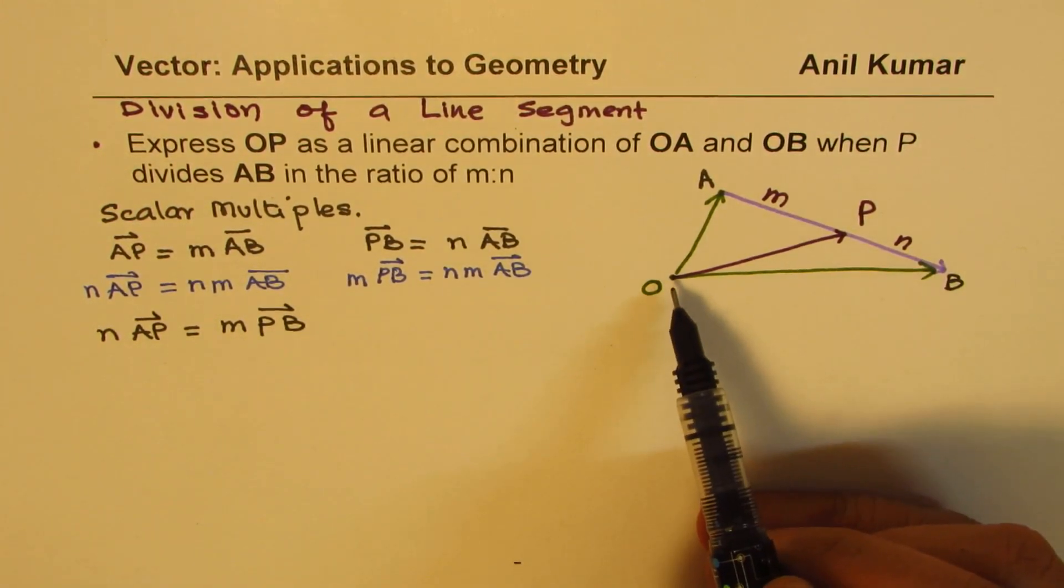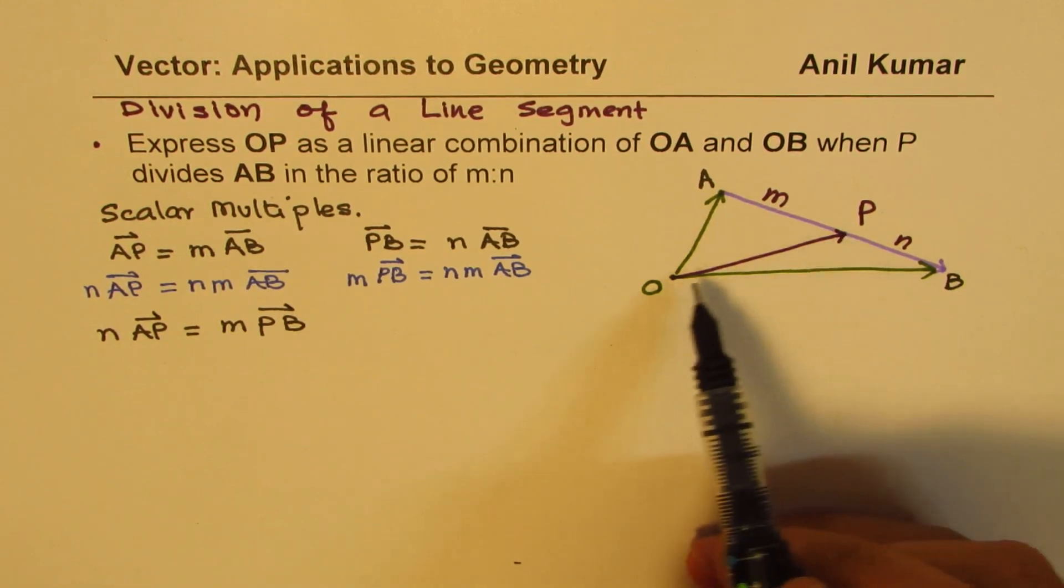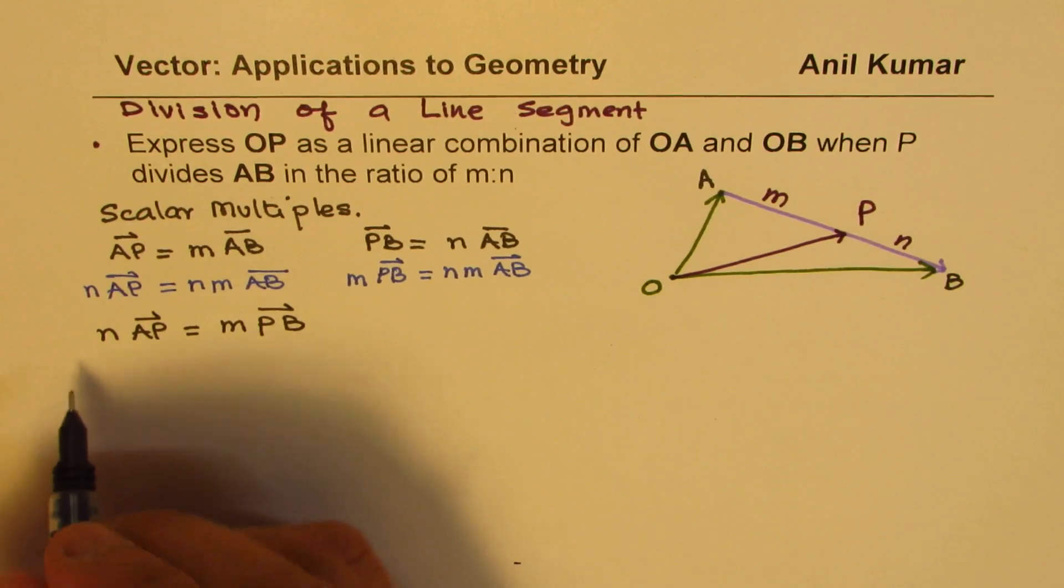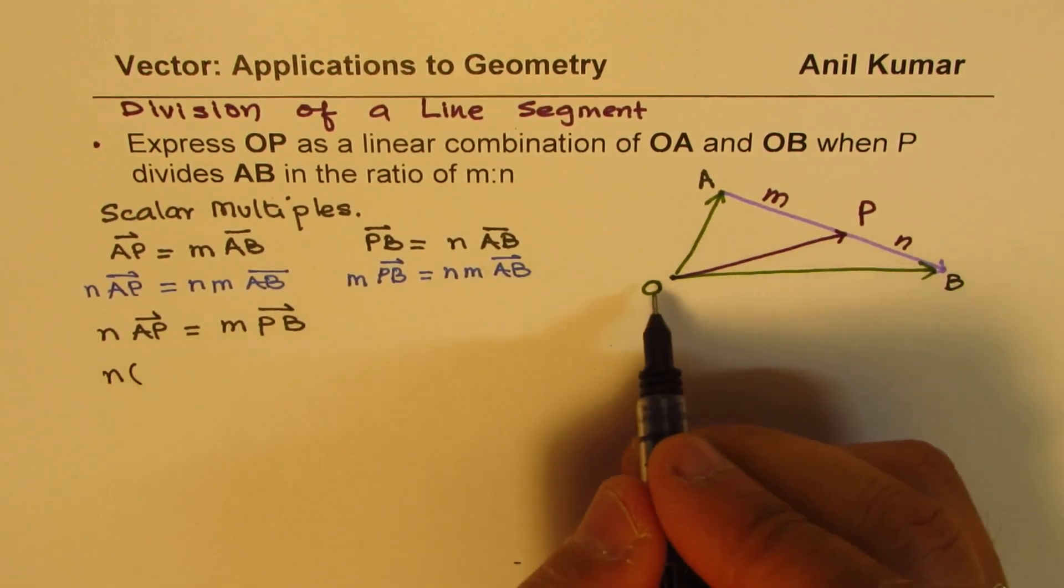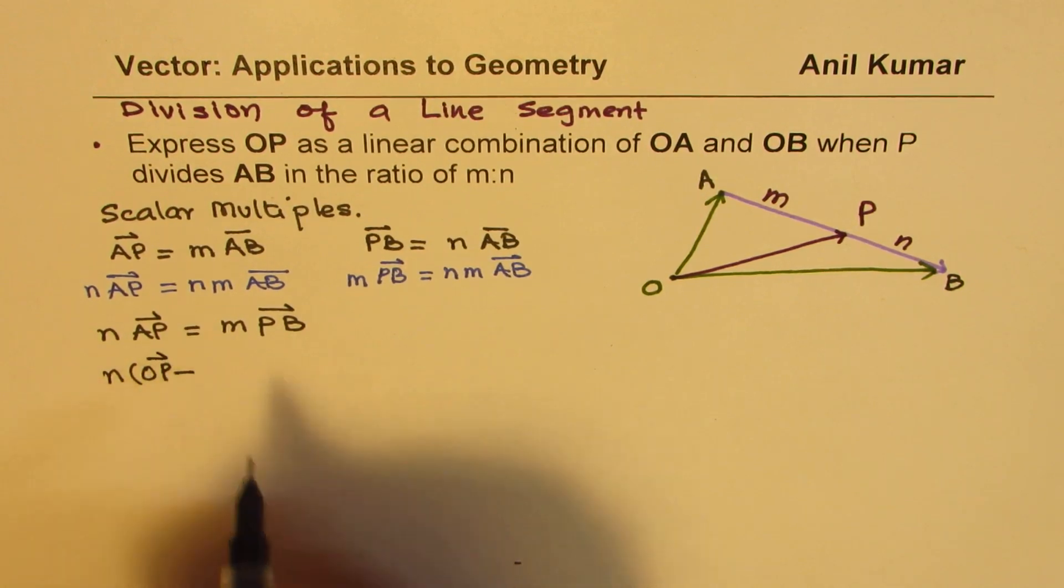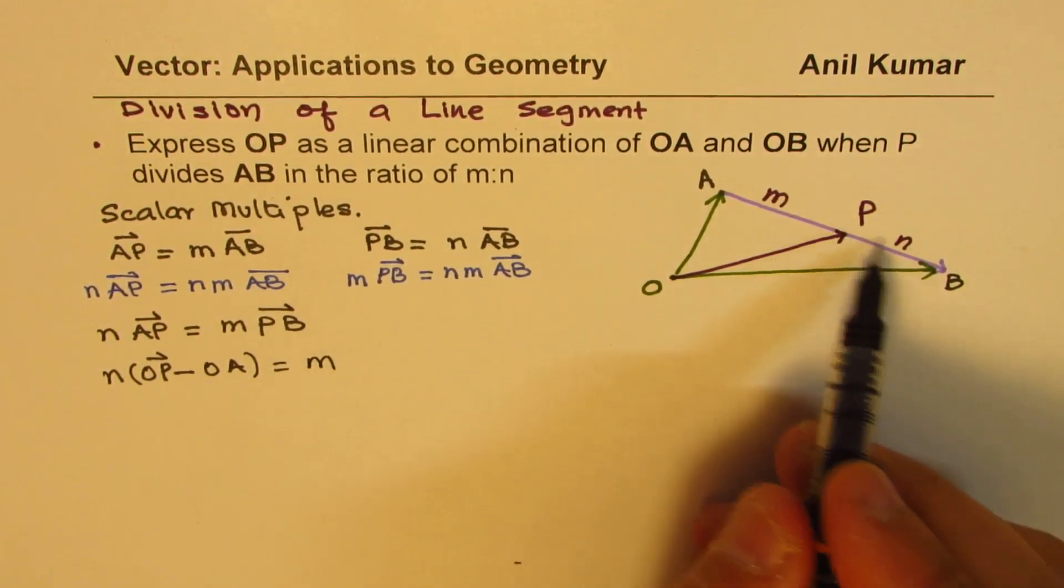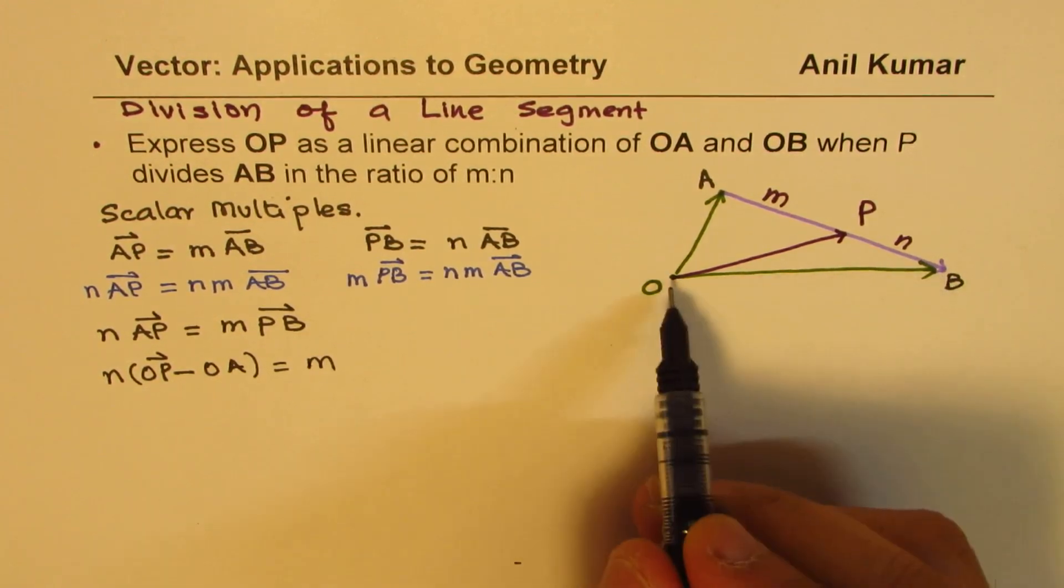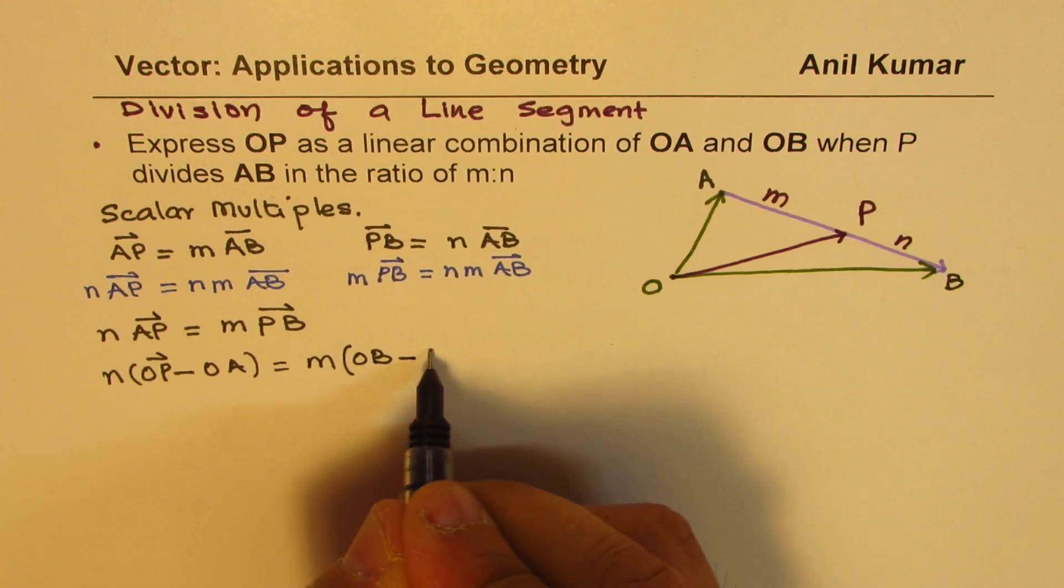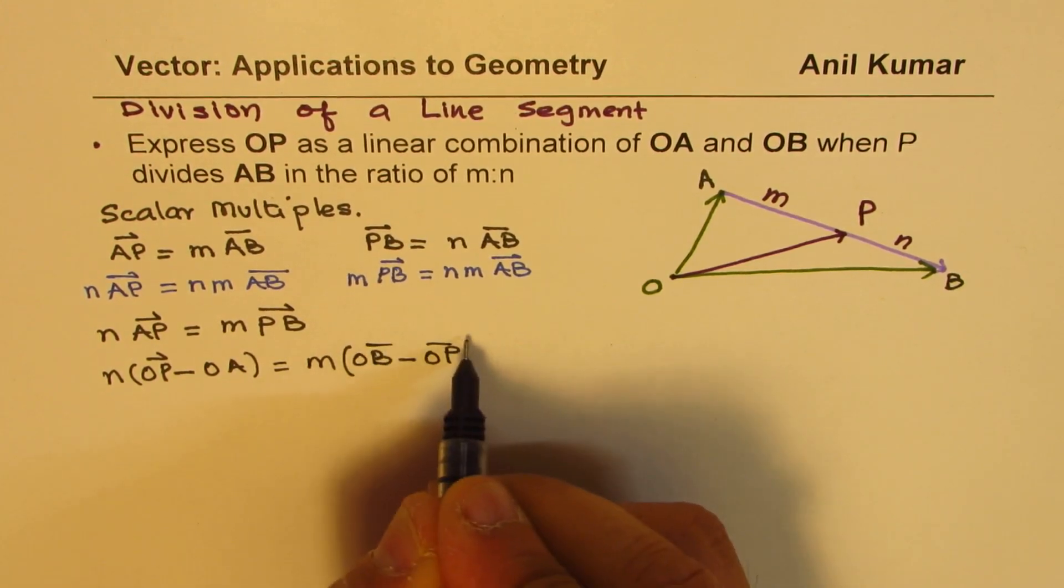Now, what is AP? A to P could be written as OP minus OA. A to P is OP minus OA, and P to B is OB minus OP.